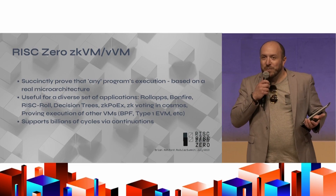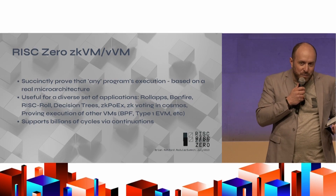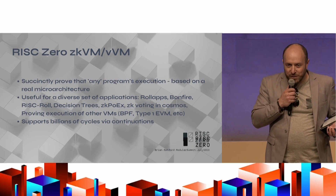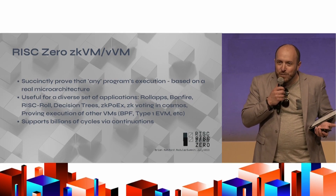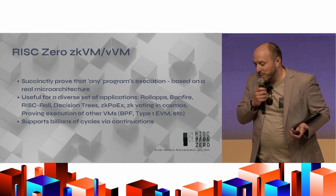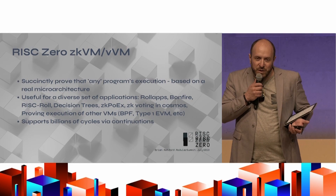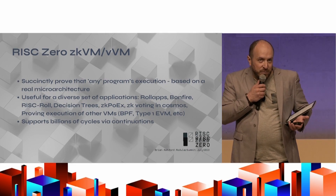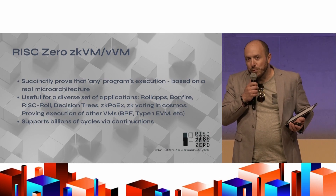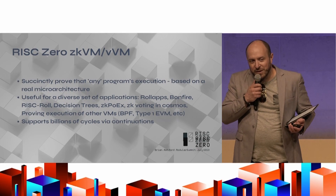We've just recently added this pretty amazing capability we call Continuations. This lets you split proofs into any number of chunks and prove them independently, which lowers memory requirements and lets you roll things up in parallel and prove arbitrarily long computations. So there's no longer any kind of cycle limit.